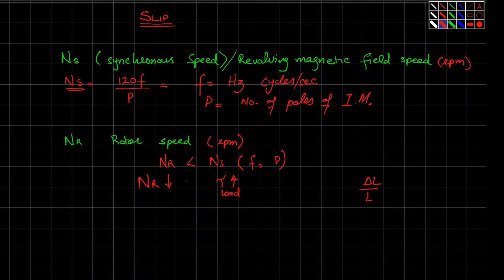Like change in length divided by original length, this was Young's modulus. Similarly, we have a quantity here: Ns minus Nr divided by Ns. This equals slip, and this slip is basically in percentage that starts from 0 and goes to 100%.